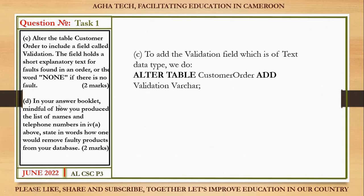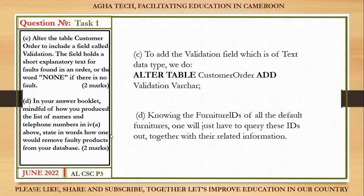Part d: state in words how you will remove the faulty product from your database. Knowing the FurnitureID of the faulty furniture, you would query these IDs out together with their related information.